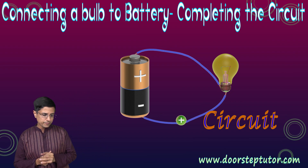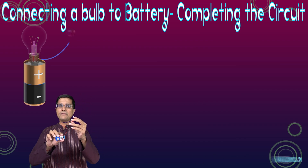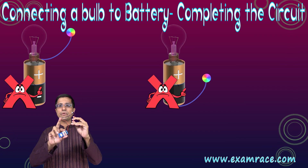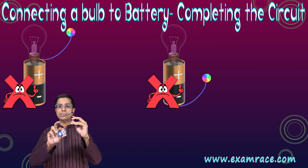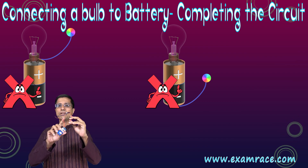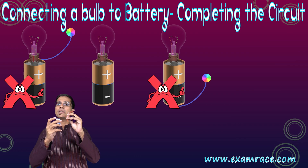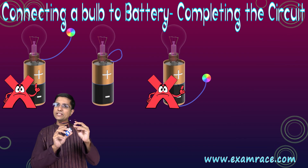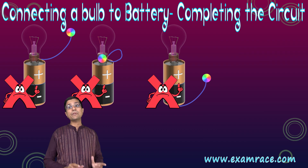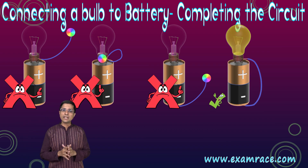If you notice, the only correct way to connect a bulb to a battery is to connect one end of the bulb to one terminal of the battery, and the other end of the bulb to the other terminal of the battery. There is no other way to make a good connection, and of course we also have to make sure that all our wires are properly connected with no loose connections.